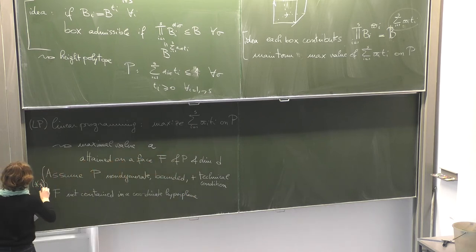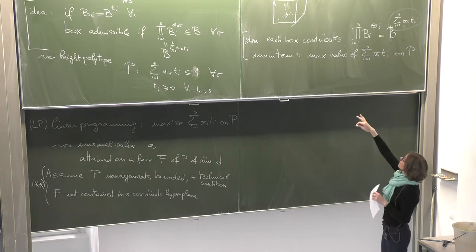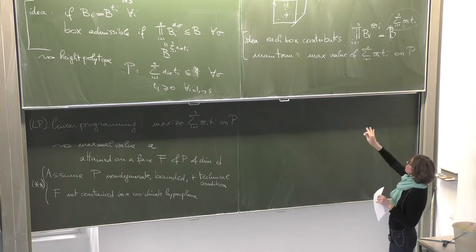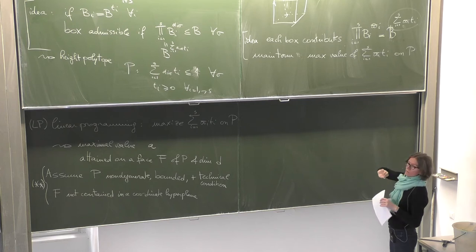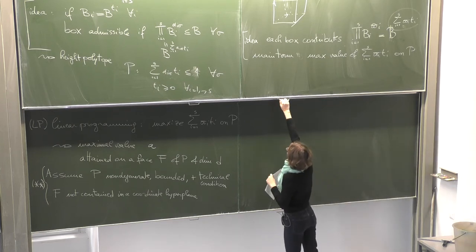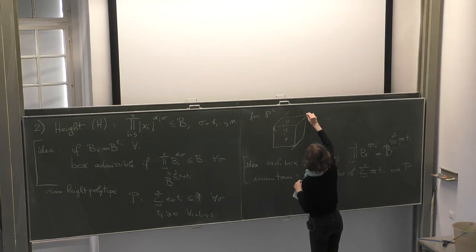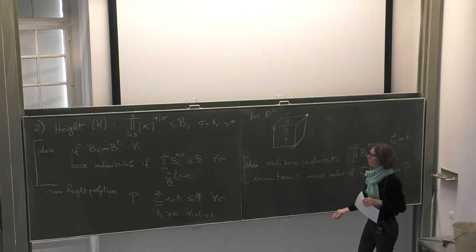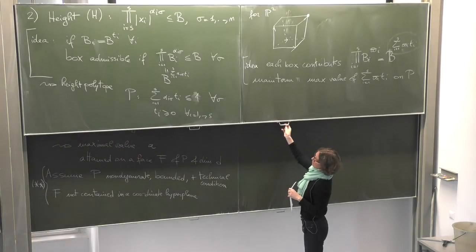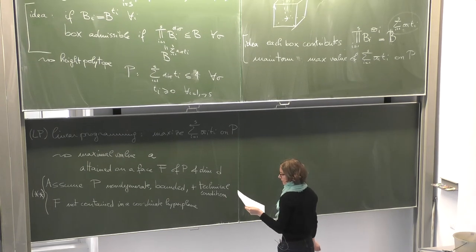I also assume that the face F is not contained in a coordinate hyperplane of the space where the polytope lives. These are my assumptions double star. What does this mean? For example, we cannot take as a face anything contained in the axes. In the case of projective space with the standard height, the maximal face is always the vertex opposite to the origin, and that satisfies all the assumptions. That's a somewhat trivial example, but it's a nice picture.